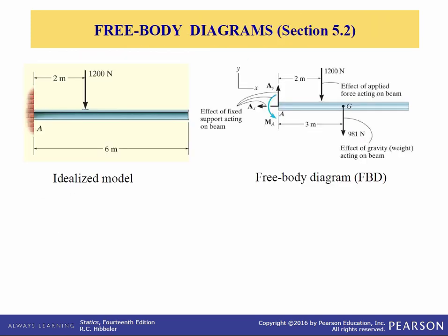Here's an example of a two-dimensional problem. Here we see the idealized model so we have a beam and it has an applied load of 1200 newtons which is two meters away from this wall. Now we call this a fixed support and it can withstand forces in the x and y direction as well as a couple moment about A.